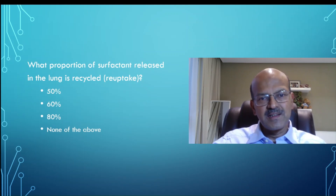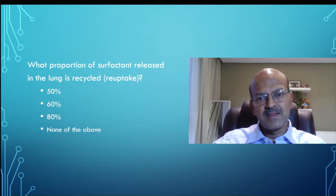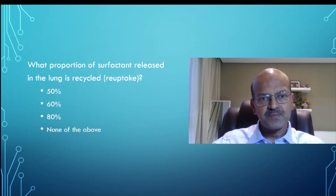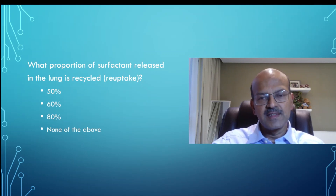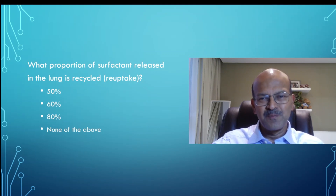The first question is displayed there. What I would suggest is I'll pause for a few seconds after I read it out, and you think of an answer, and then we will discuss the right answer and the reasoning behind that. So what proportion of surfactant released in the lung is recycled — that is re-uptake of surfactant in the lung? The choices are 50%, 60%, 80%, and none of the above.